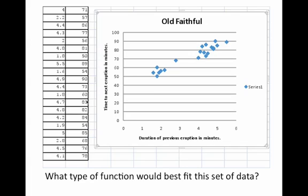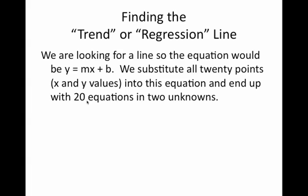So, if we can agree on the fact that this best fits a line, then we go to that equation y = mx + b and we will substitute all 20 points, all those 20 x and y values from that table, into this equation and end up with 20 equations in two unknowns. Now, some of you might be saying, why would we find an equation for each data point? After all, we really only need two points to come up with a line.